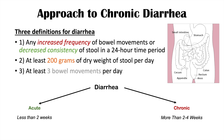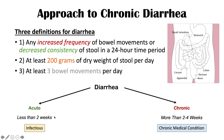The reason we distinguish acute from chronic diarrhea is because it helps us determine the cause. Acute diarrhea is most often infectious in nature, although it could be the beginning of a chronic condition. Chronic diarrhea is more likely to be a chronic, non-infectious medical condition. We're going to get into all of the medical conditions that cause chronic diarrhea.